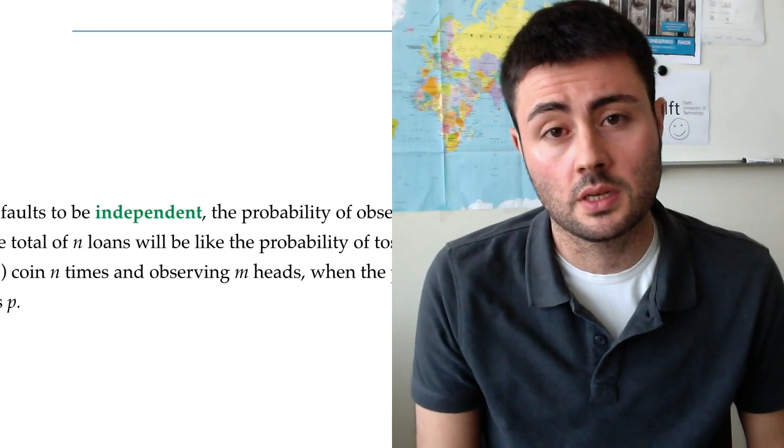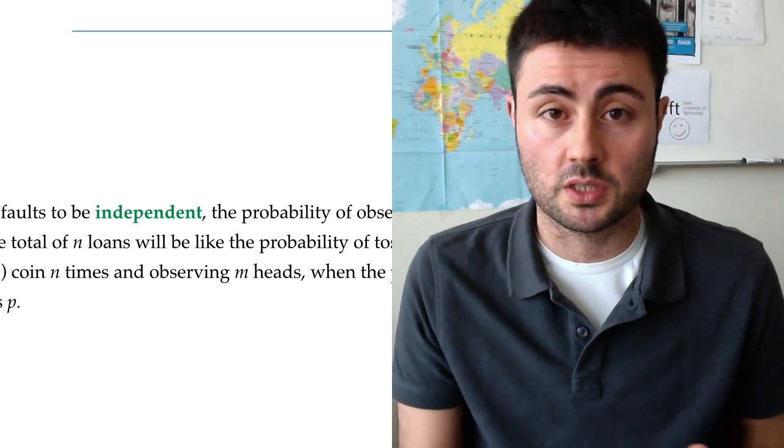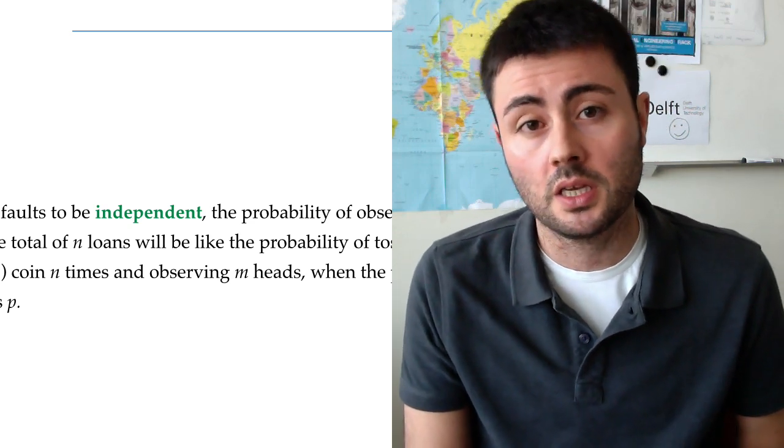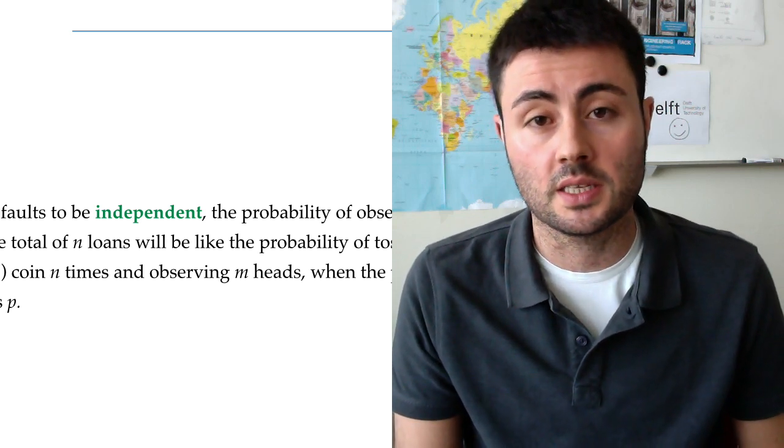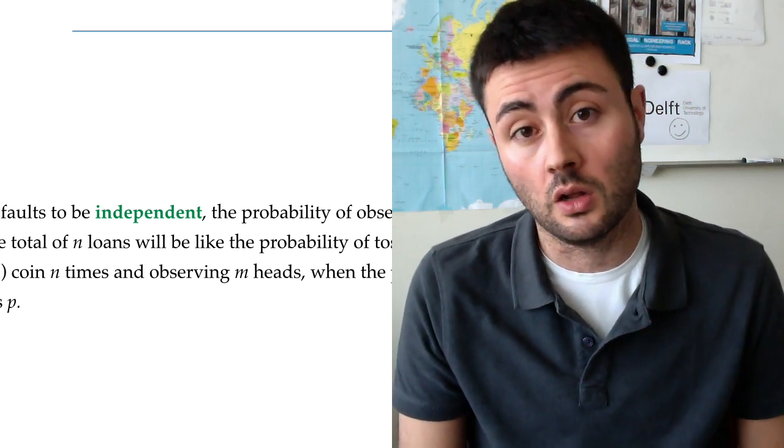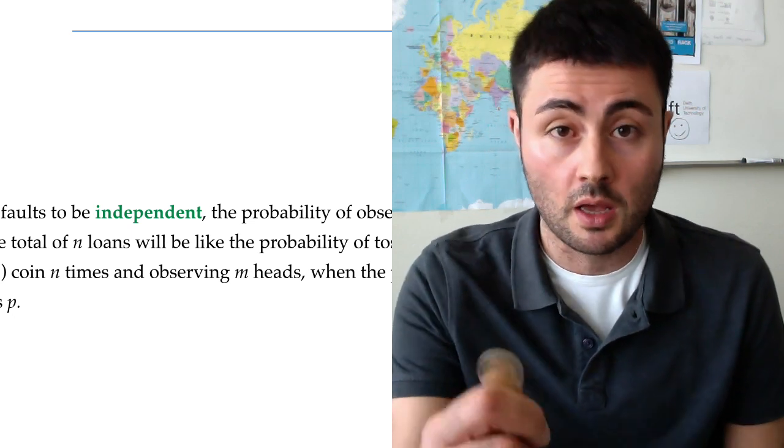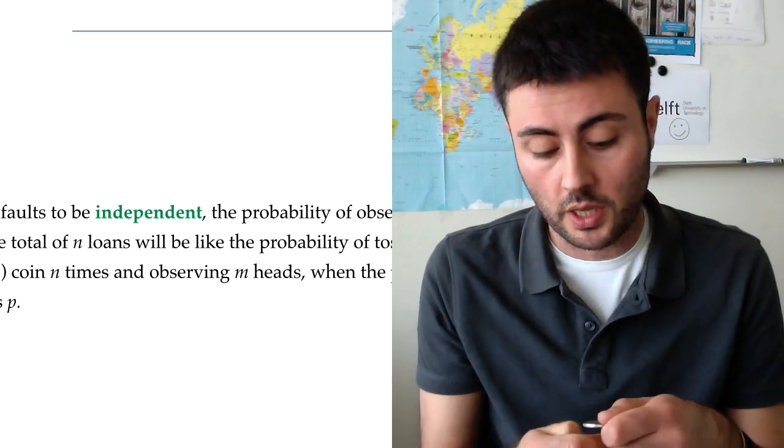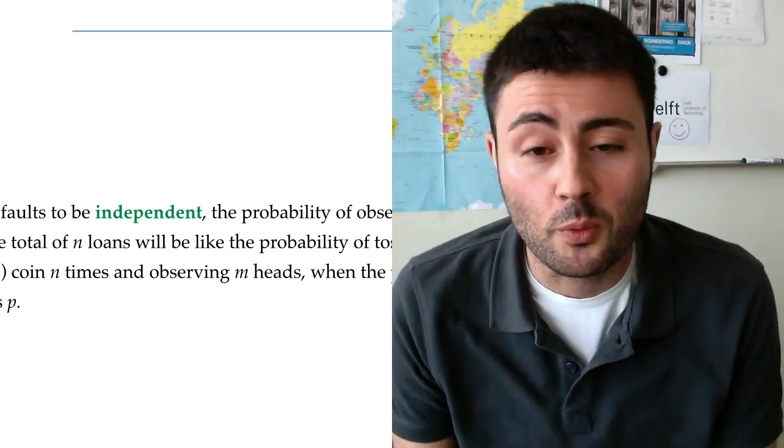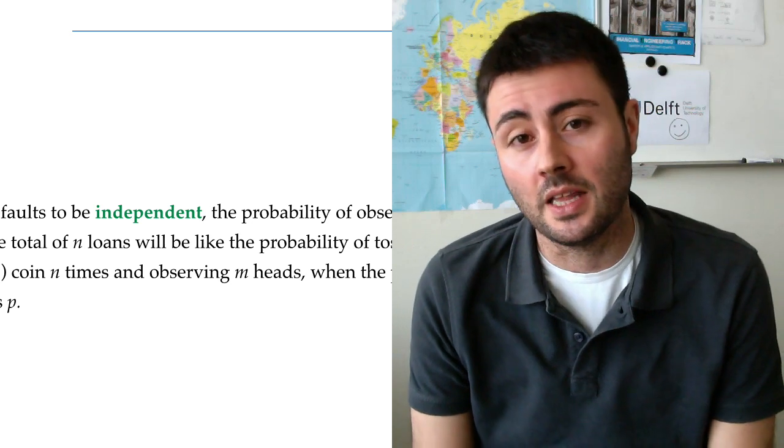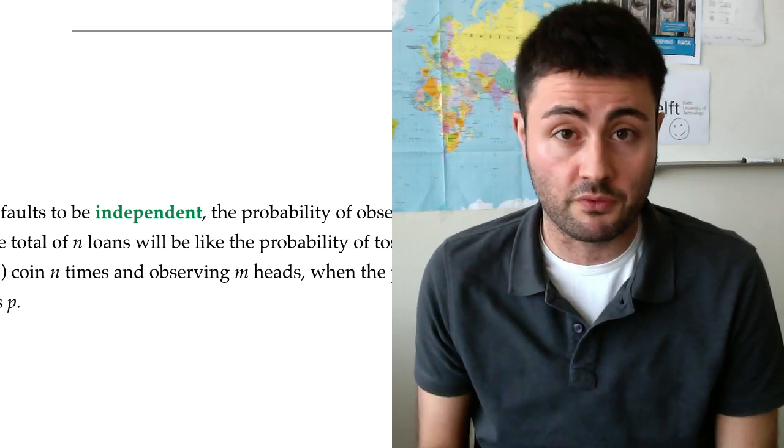I would like you to notice that in this framework, given the assumptions we have just considered, the probability of observing M different defaults in a set of M loans corresponds to the probability of M heads when we toss a coin N times. P will be the probability of observing a head.